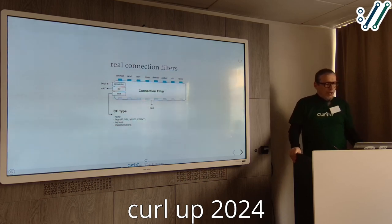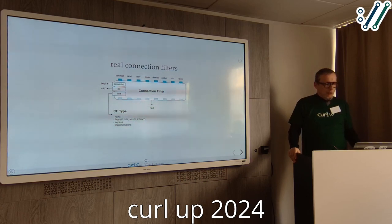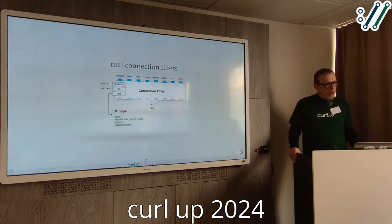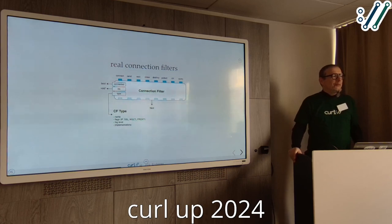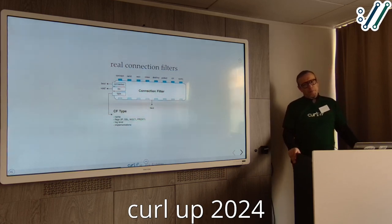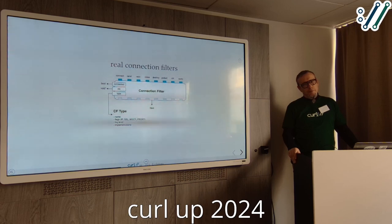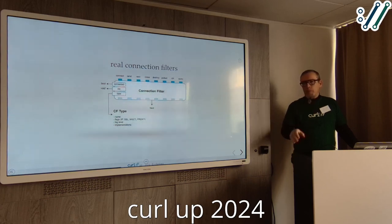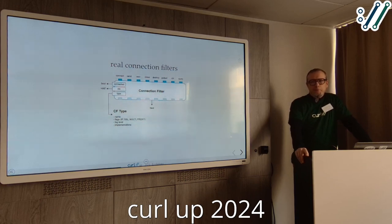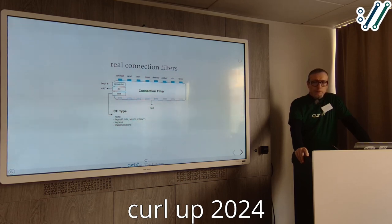We don't want to introduce version numbering and backward compatibility into this because it's really just an internal thing. We've had requests for an extensible version of connection-related interfaces where people want to add their own code, but it's such a low-level responsibility. Someone would need to provide a really good use case for us to expose and guarantee this API rather than just say 'go ahead and maintain your own patches.'